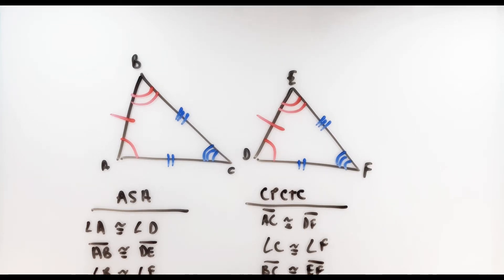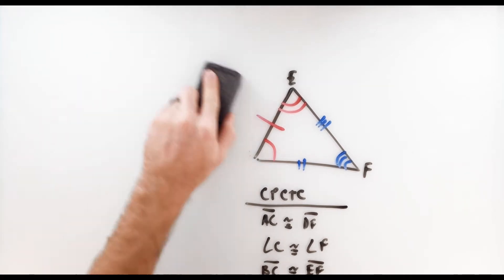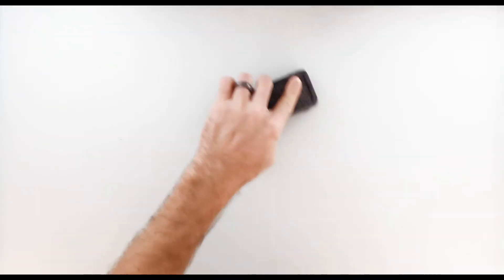The fact that corresponding parts of congruent triangles are congruent allows us to use that as a justification to prove certain statements. Because it would be super annoying to write out that full statement every time we wanted to use it in a proof, and because mathematicians love acronyms, we abbreviate that as CPCTC. The biggest point here is to recognize that we can only use this fact after we already know the triangles or figures are congruent to one another. Let's look at a couple examples set up as two-column proofs.